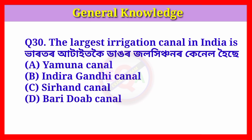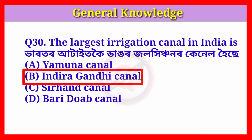Question number thirty: The largest irrigation canal in India is which one? Answer: Option B, Indira Gandhi Canal.